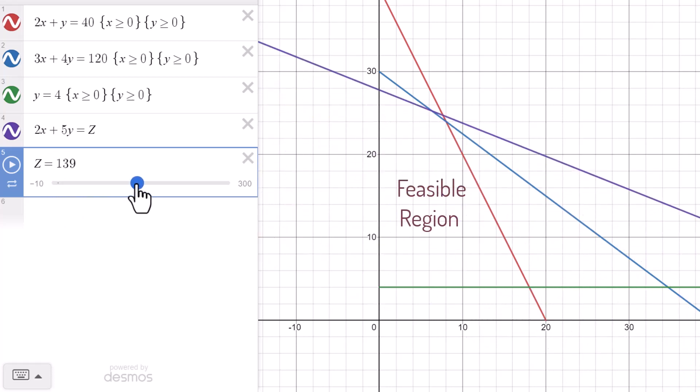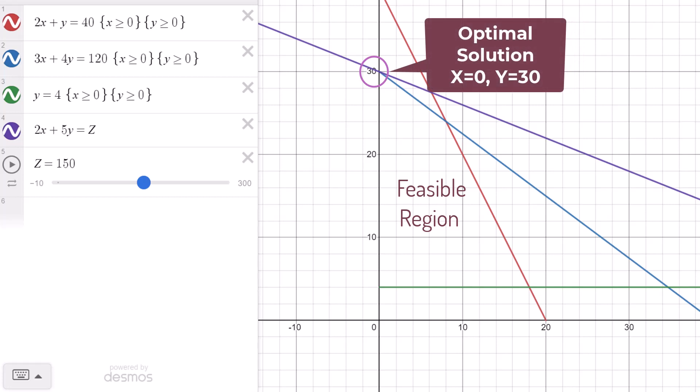Now I can slide much beyond the feasible area. Since this is a maximization problem, the highest point the objective function line touches before leaving the feasible region is the optimal solution point. So the optimal solution occurs at x equals 0 and y equals 30 and the corresponding objective function value is 150.